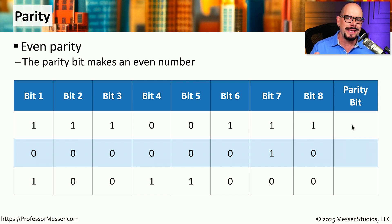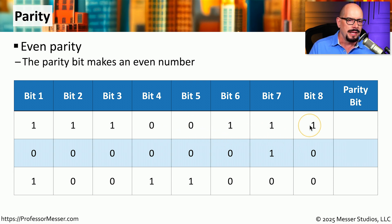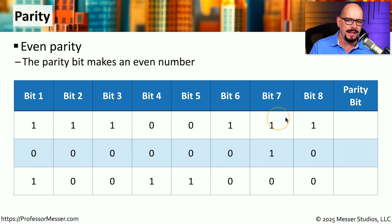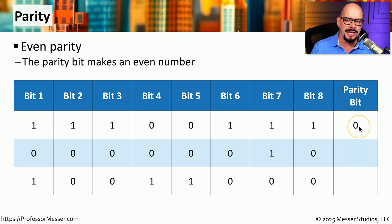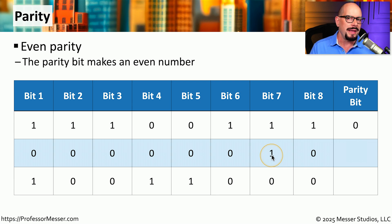Let's calculate the parity bits for three bytes. Starting with the first byte: 1, 1, 1, 0, 0, 1, 1, 1. If we add up all the ones, there are 6 — already an even number — so the parity bit would be 0. For the next byte: 0, 0, 0, 0, 0, 1, 0. Counting the ones, we have 1, which is odd. So to make this even parity, we need to make our parity bit a 1, and now all the ones on that line add up to an even number.